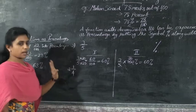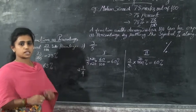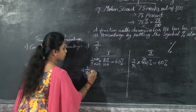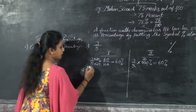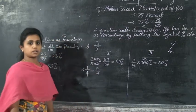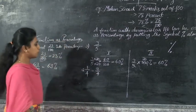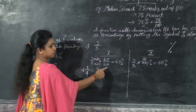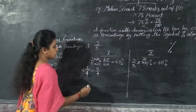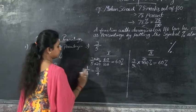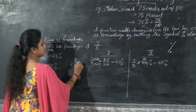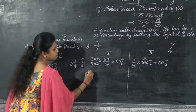To convert this mixed fraction into a percentage, first convert the mixed fraction into an improper fraction. That is, 4 times 2 plus 1 equals 9, so 2¼ becomes 9 by 4.